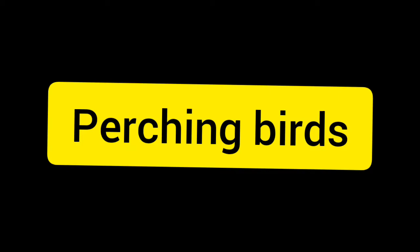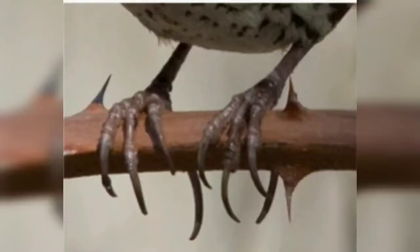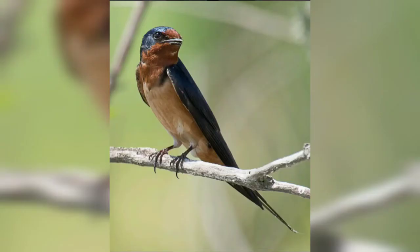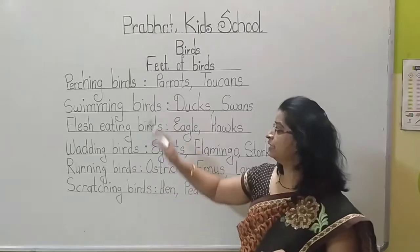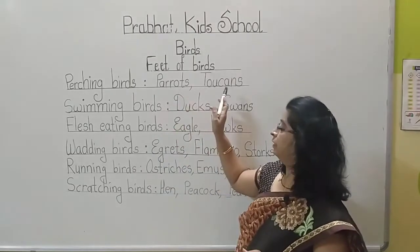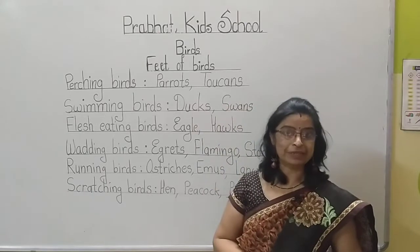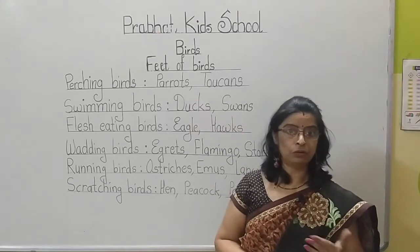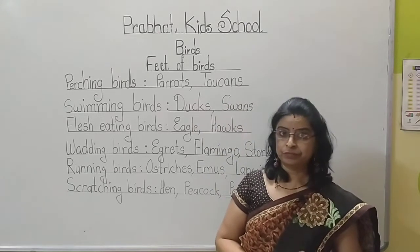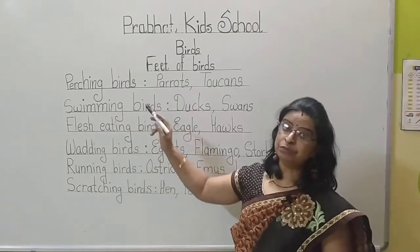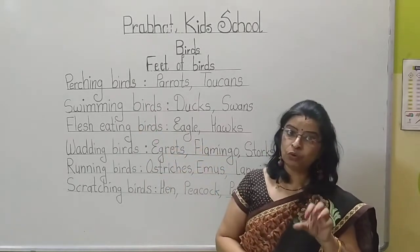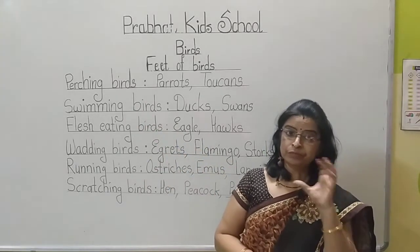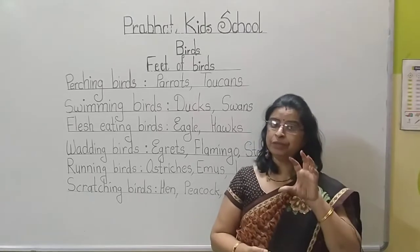Perching birds. Their claws help them to hold on to tree branches. Perching birds — such as parrots and toucans — are always found on trees. These birds are perching birds; they perch on the branches of trees.